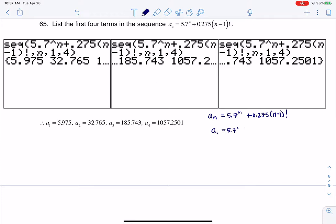This would be 5.7 to the 1 plus 0.275 times 1 minus 1 factorial. So that would basically be 5.7 plus 0.275 times 0 factorial and 0 factorial is 1. So when I do 5.7 and I add 0.275 to it, I do get 5.975 and that's where you see my first term here.